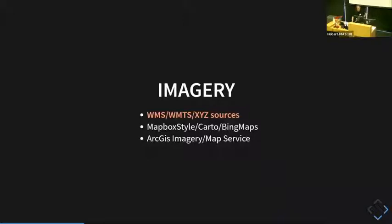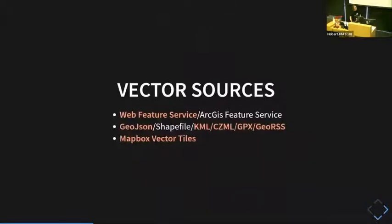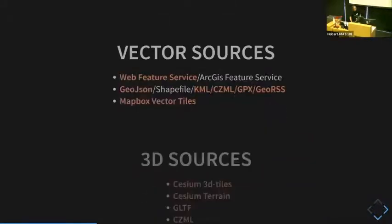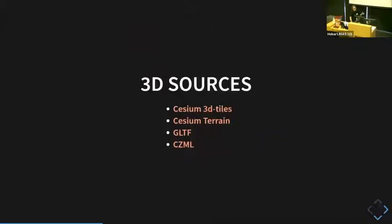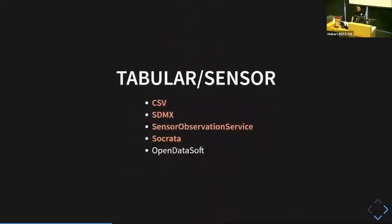For imagery, you have Web Map Service and Web Map Tile Service. For vector sources: Web Feature Service, GeoJSON, Mapbox Vector Tiles. For 3D sources, because it's a Cesium-based library, mostly Cesium 3D sources — so 3D tiles, terrain, GLTF. For tabular sensor data: CSV, SDMX, Sensor Observation Service, Socrata — all quite closely related to how we handle them in Terrier.